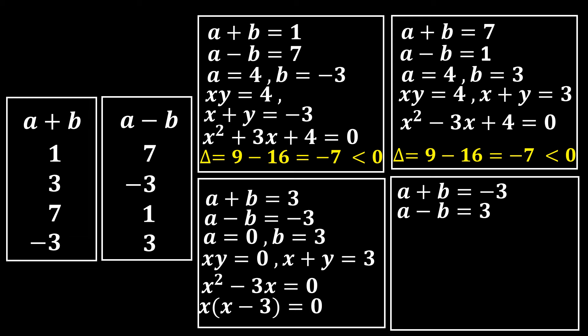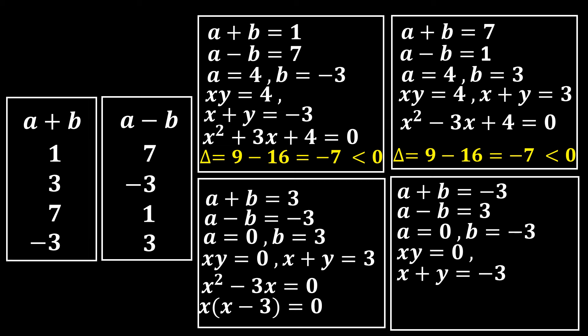System 4: a + b = -3, a - b = 3. Adding gives 2a = 0, so a = 0, and then b = -3. Thus xy = 0 and x + y = -3. The quadratic is x² + 3x = 0, or x(x + 3) = 0.